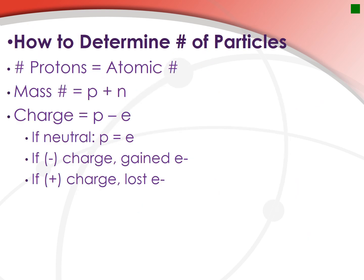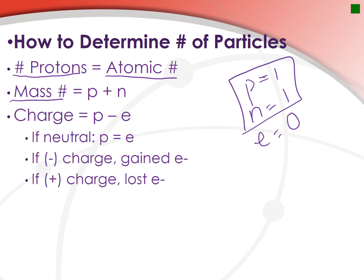Here are the math equations you absolutely must memorize. First: protons equal your atomic number — if the atomic number is 12, you have 12 protons. For mass: protons have mass 1, neutrons have mass 1, and electrons have mass 0. So the only two particles that contribute to mass are your protons and neutrons.